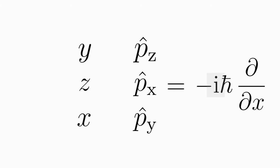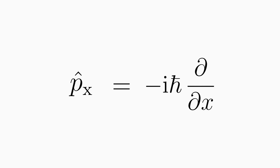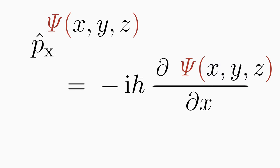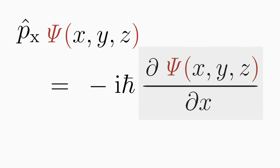Here i is the imaginary unit, h-bar is the reduced Planck's constant, and del/dx is the derivative operator which, when applied to a function, yields the derivative of that function with respect to x. Therefore, such an operator takes effect only when applied to a position-dependent function, for example on ψ. The result is the derivative of this function multiplied by minus ih-bar.